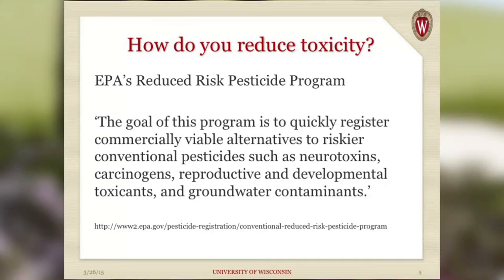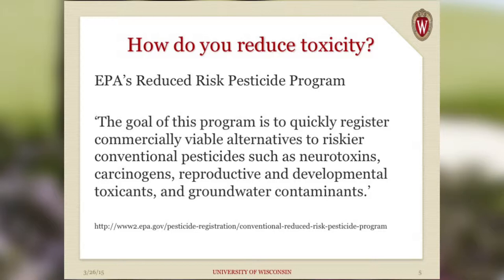The EPA Reduced Risk Program is nothing new — it was developed in 1996 with the Food Quality Protection Act. It's an incentive for companies to produce less toxic products. The latest numbers suggest it takes companies like Bayer about 10 years and $300 million to bring a product from discovering the molecule to market. If a molecule is proposed to the EPA as reduced risk, the EPA will expedite the whole process, saving money and extending time under patent. The advantages EPA lists include lower impact on human health, lower runoff potential, lower toxicity to non-target organisms, and lower use rates.